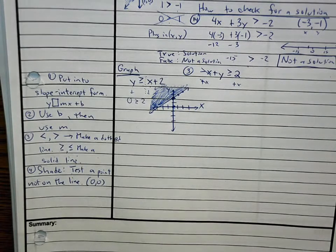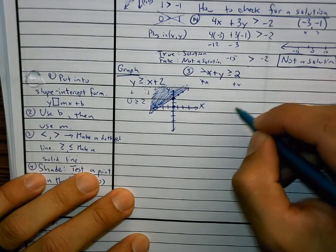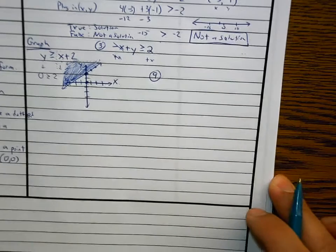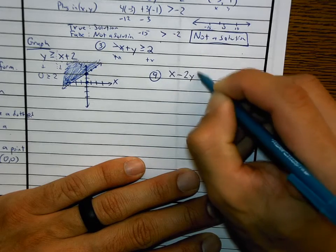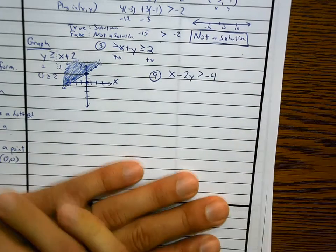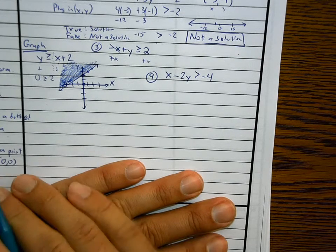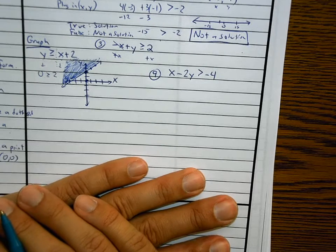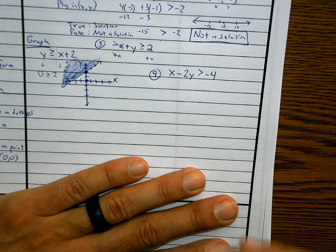That was number three. Now let me show you something like number nine. Number nine looks like this: x minus 2y is greater than negative 4. I'm going to go a little faster this time. Sometimes when you do problems, you're going to have to add one little extra step that a lot of people forget about.